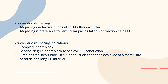For AV pacing, it is ineffective during atrial fibrillation and flutter. AV pacing is preferable to ventricular pacing because atrial contraction helps cardiac output. Indications include complete heart block, second degree heart block to achieve 1-to-1 conduction, or first degree heart block if 1-to-1 conduction cannot be achieved at a faster rate because of a long PR interval.